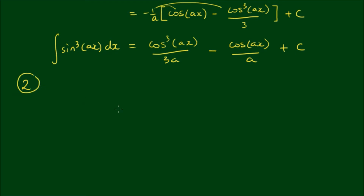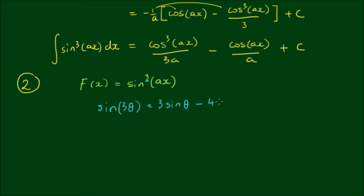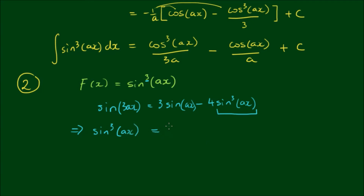Now what about using the trigonometric identity? The idea behind this is power reduction. We have the integrand f(x) equals sin³(ax). Using a triple angle formula, we can get this cubic power down to a singular power, so we can just use the standard sine integral. The triple angle formula is sin(3θ) equals 3sin(θ) minus 4sin³(θ). Substituting θ with ax and rearranging to isolate the cubic term, we get sin³(ax) equals (3/4)sin(ax) minus (1/4)sin(3ax).